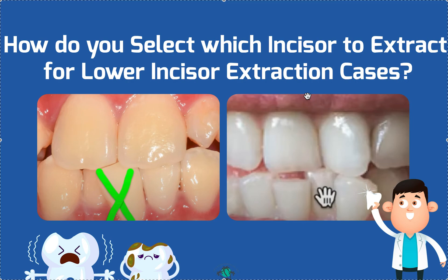To answer the question: lots of things to take into account. If everything is the same — teeth are the same size, no perio, no attrition, no endo, no restorations, no root resorption — then I'm going to pick the one that's most displaced. For example, on this case I'd probably take that one out; on this one I'd take the most buccal or most lingual one out. Or probably this one because it's rotated. Usually the most buccal one has the most recession, so it makes it easier to align the teeth.